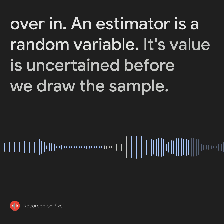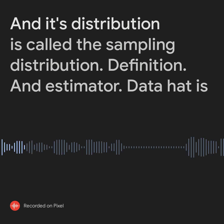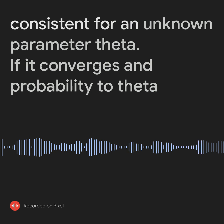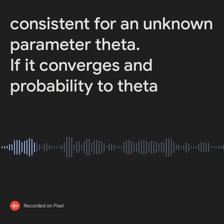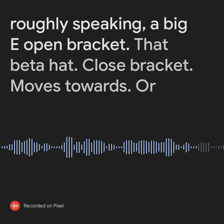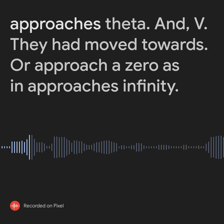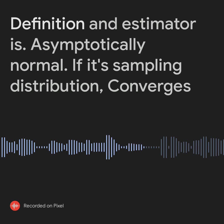An estimator is a random variable — its value is uncertain before we draw the sample, and its distribution is called the sampling distribution. Definition: an estimator theta-hat is consistent for an unknown parameter theta if it converges in probability to theta. Roughly speaking, E[theta-hat] approaches theta and Var(theta-hat) approaches 0 as N approaches infinity.